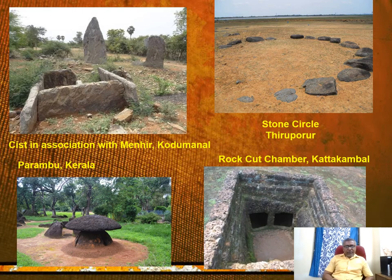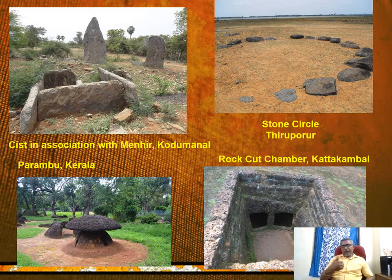The top left image shows a transseptal cist and a menhir called Nedungal, found near Kodumanal in Erode district. The top right shows a stone circle found at Thirupporur near Chennai. The bottom left is called a topical found at the Parambu in Kerala, and the bottom right is a rock chamber at Kattakambal in Kerala. The rock chamber is buried beneath the surface in the rock, with the burial monument found as inner segments of the rock surface.